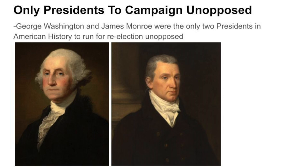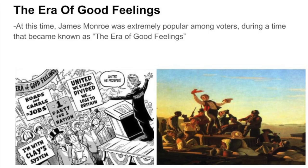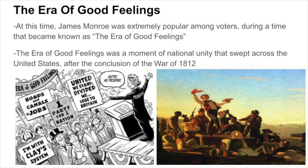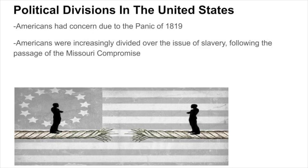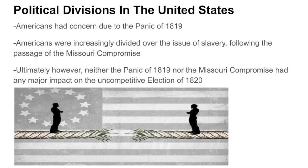This made George Washington and James Monroe the only two presidents in American history to run for re-election unopposed. At this time, James Monroe was extremely popular among voters during a time that became known as the Era of Good Feelings. This was a moment of national unity that swept across the United States after the conclusion of the War of 1812. Despite this unity, there were some concerns due to the Panic of 1819 and increasing conflict over the issue of slavery following the passage of the Missouri Compromise. Ultimately, however, neither the Panic of 1819 nor the Missouri Compromise had any major impact on the uncompetitive election of 1820.